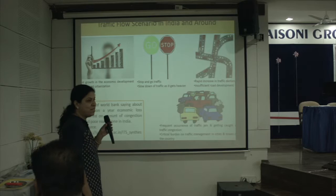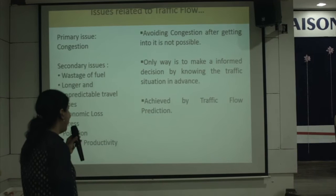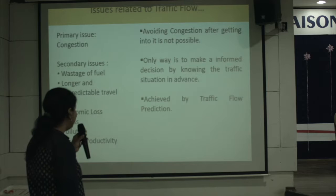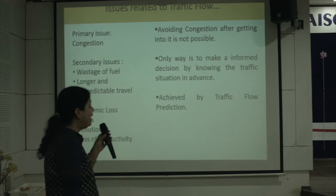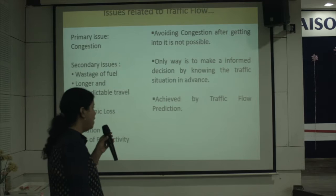The primary issue related to traffic flow is congestion, which leads to secondary issues like vessel flow, longer and unpredictable travel times, economic loss, stress, and pollution — all resulting in loss of productivity. Avoiding congestion after getting into it is not possible; the only way is to make an informed decision by knowing the traffic situation in advance. This is achieved by using traffic flow prediction.